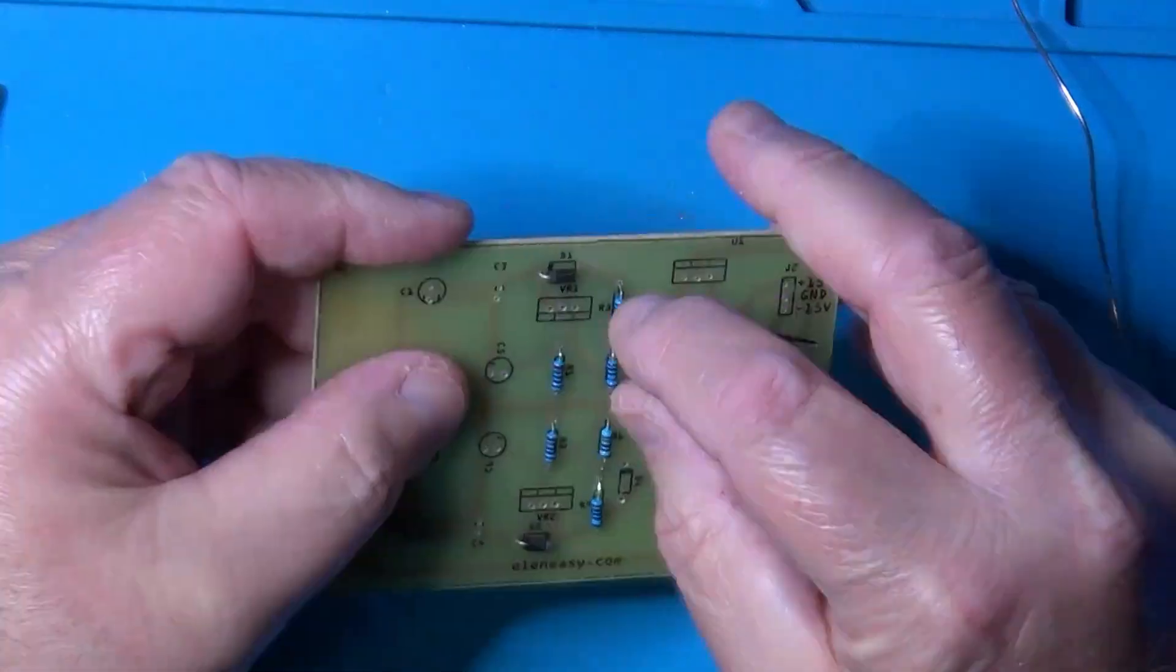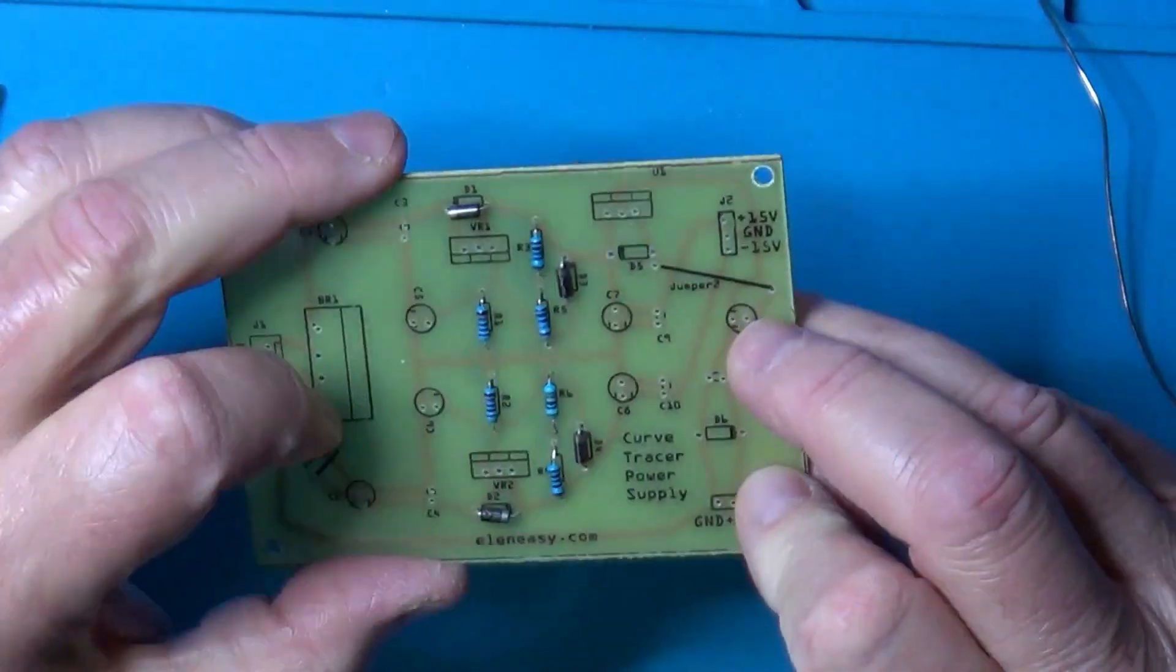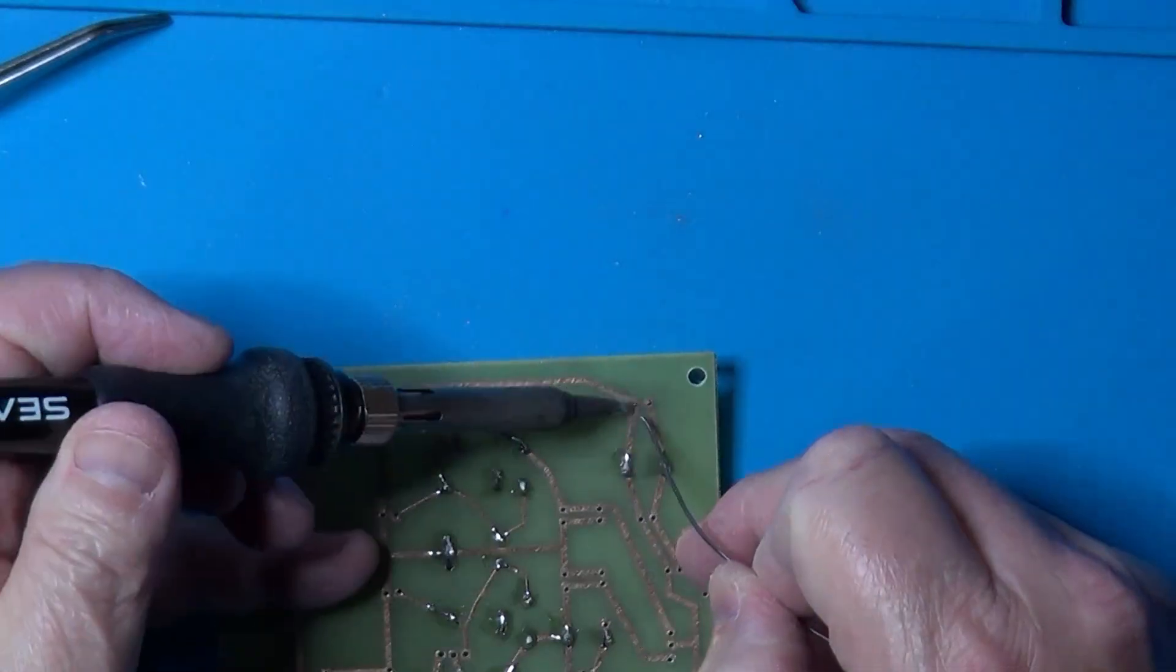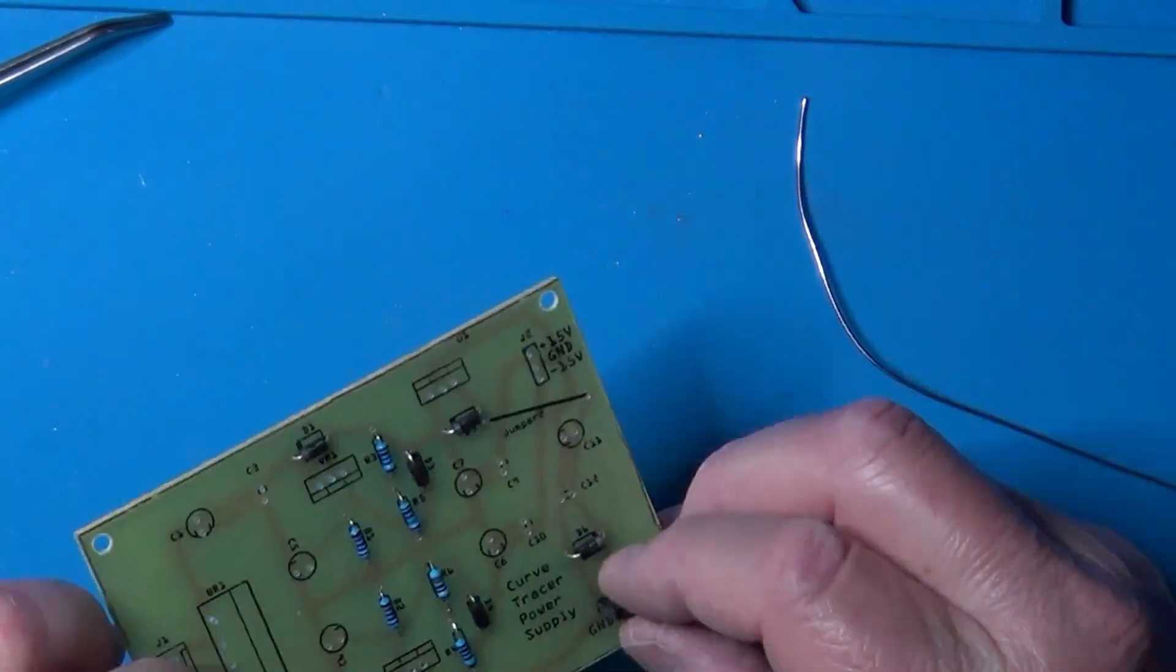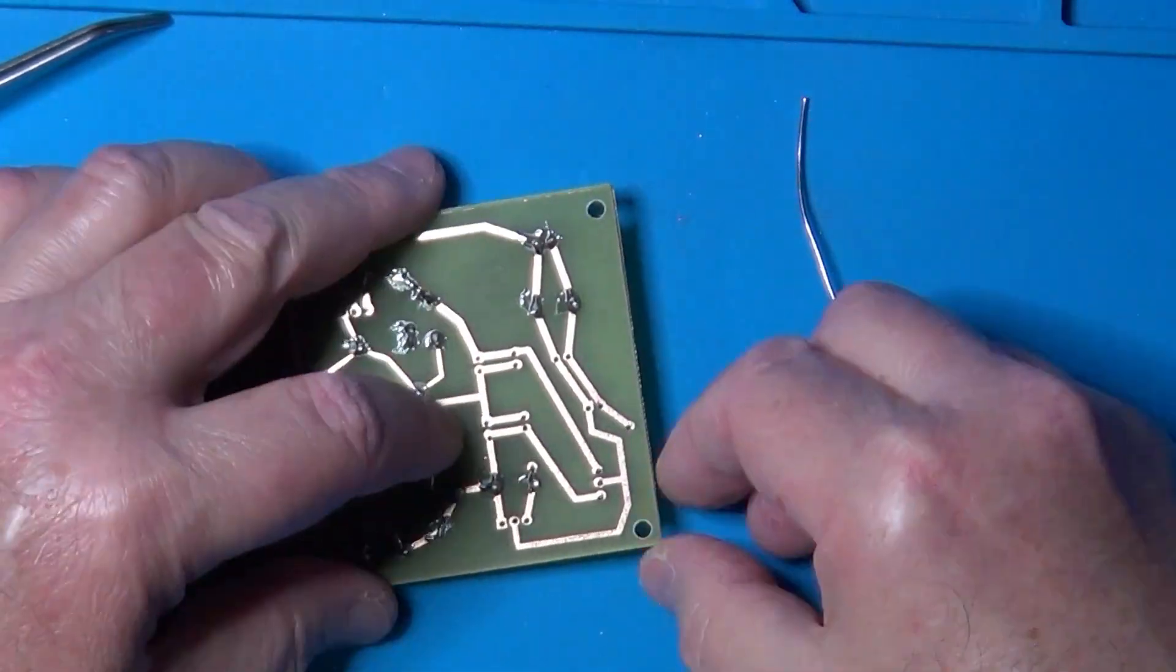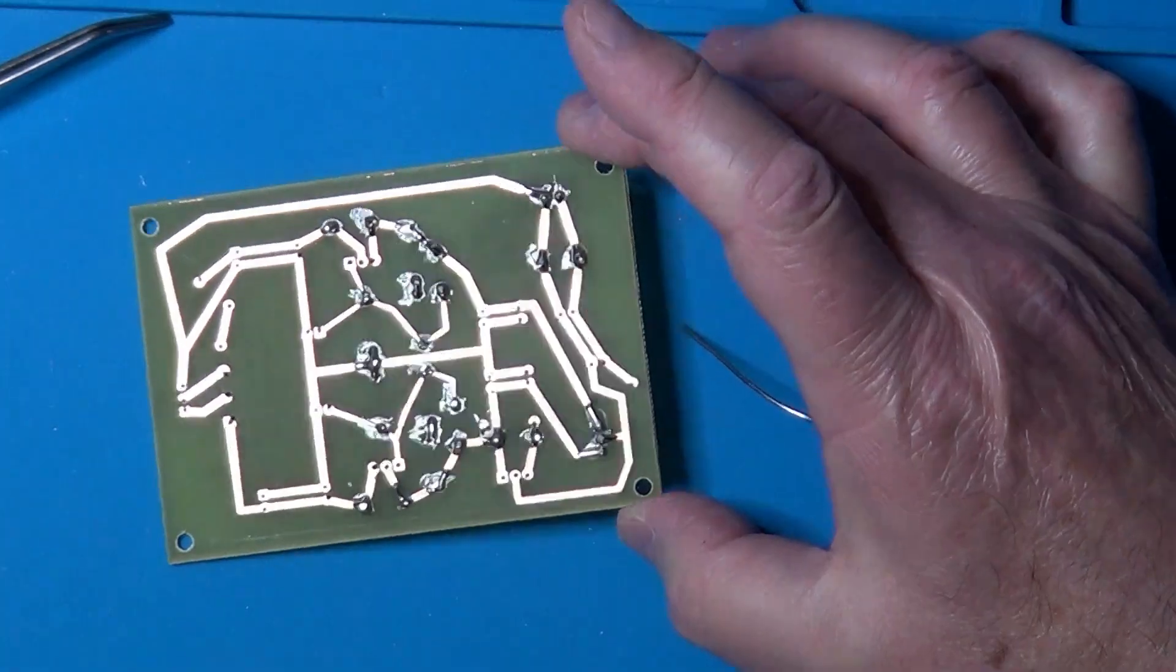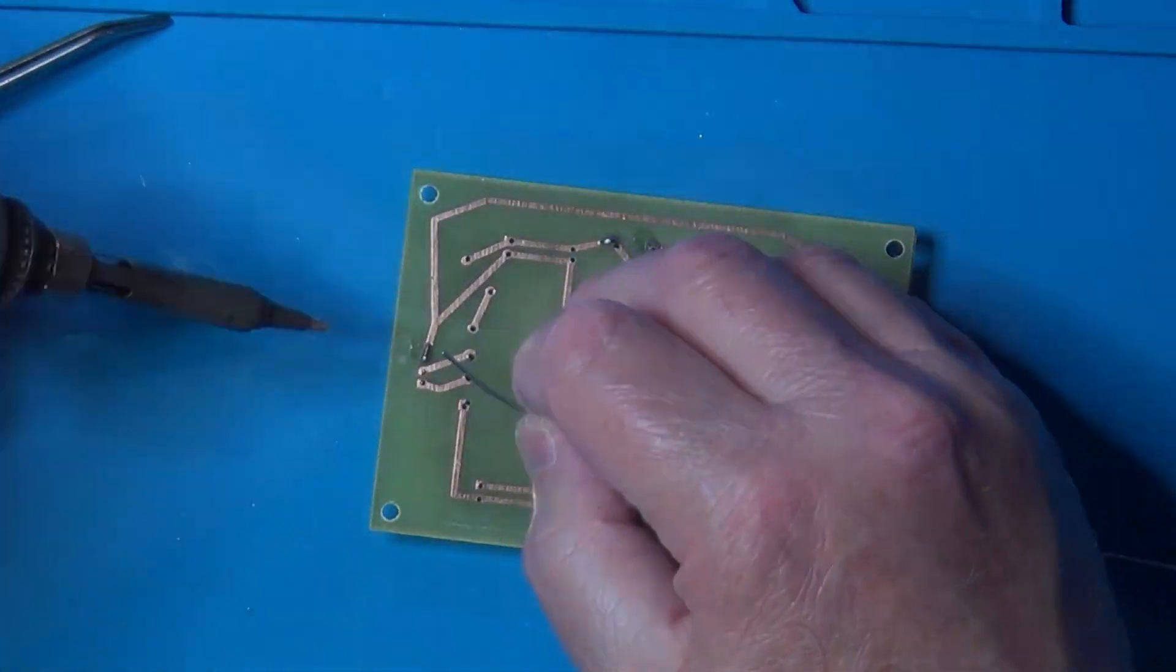Next, I moved onto the diodes, making sure that they were correctly oriented, with the reference bands aligned with the markings on the silk layer. The next step was installing the pin headers. However, after initially soldering the ones shown in this video, I decided to replace them with screw terminal blocks. These are much safer for managing power rails, as they provide a more secure connection compared to pin headers, where loose pins could easily disconnect.